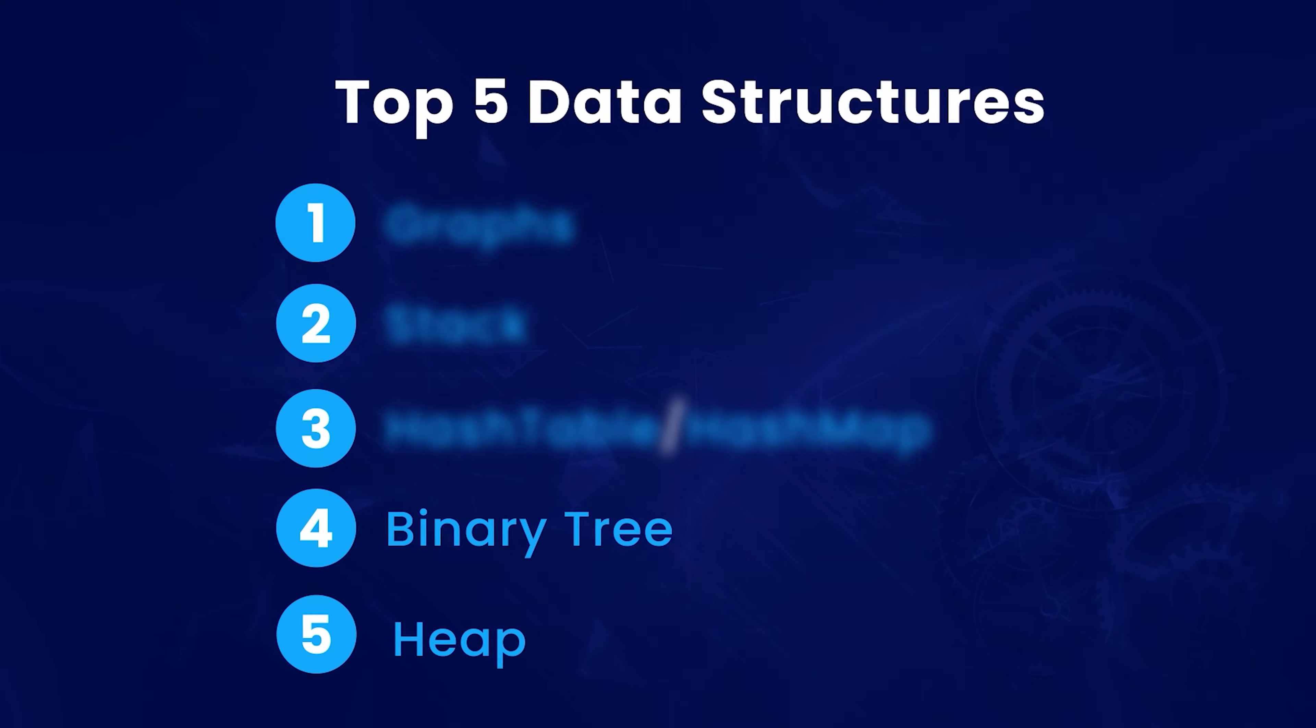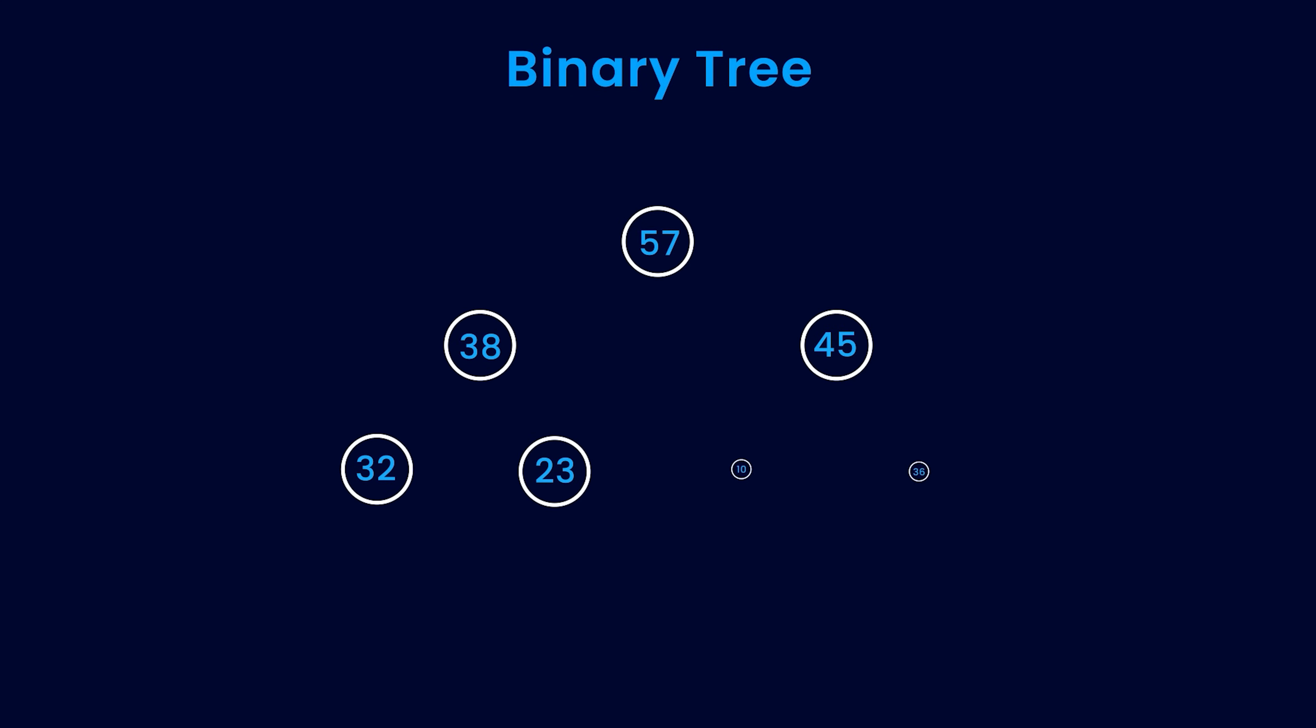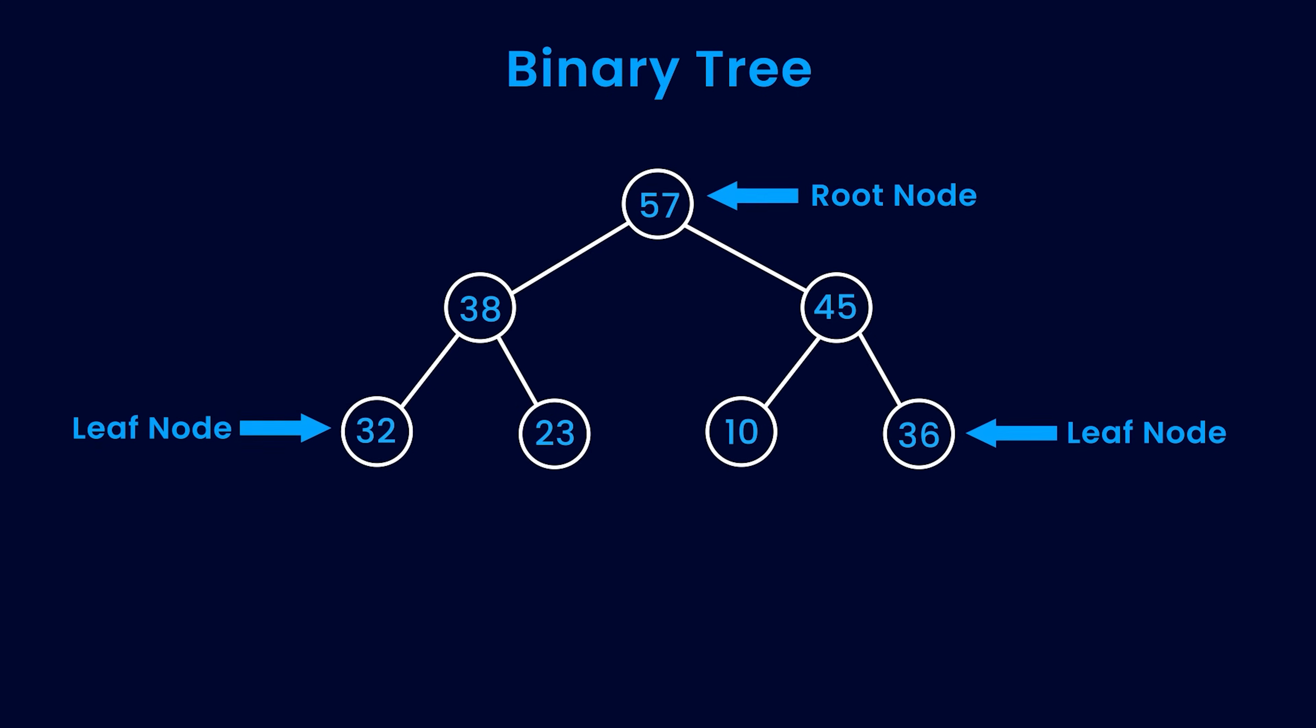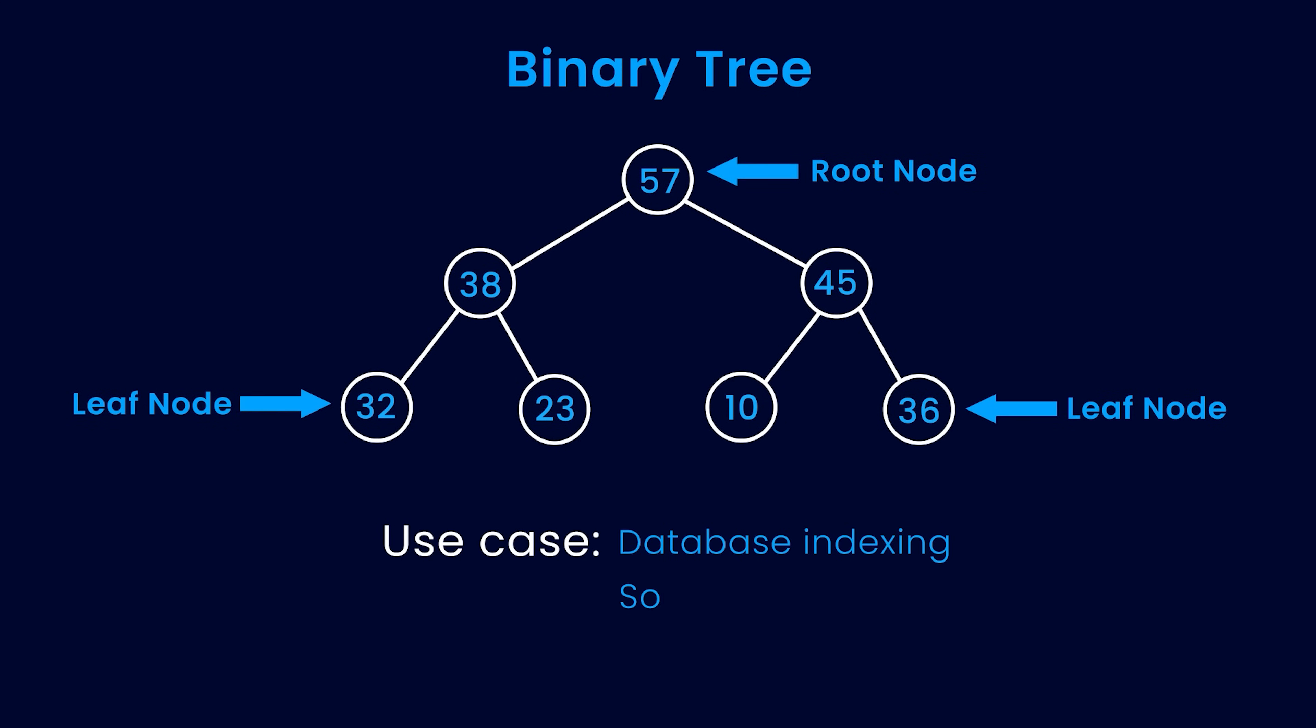At number 4, we have a binary tree. Each element or node stores a value and links to its left and right child. The topmost node of the tree is called root node and the bottommost nodes are called leaf nodes. Binary trees are used in database indexing, sorting algorithms, decision trees, etc.